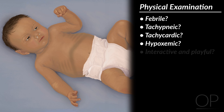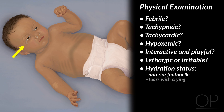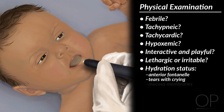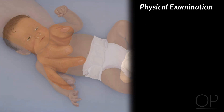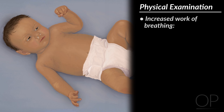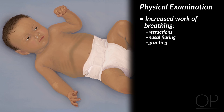Does the baby appear interactive and playful, or is she lethargic or irritable? Assess for hydration status by checking fullness of the anterior fontanelle, presence of tears with crying, mucous membranes, and capillary refill. Carefully observe for signs of increased work of breathing. Retractions can be supraclavicular, intercostal, or subcostal. If present, note whether these are mild, moderate, or severe. Nasal flaring or grunting can be seen with more significant respiratory distress.